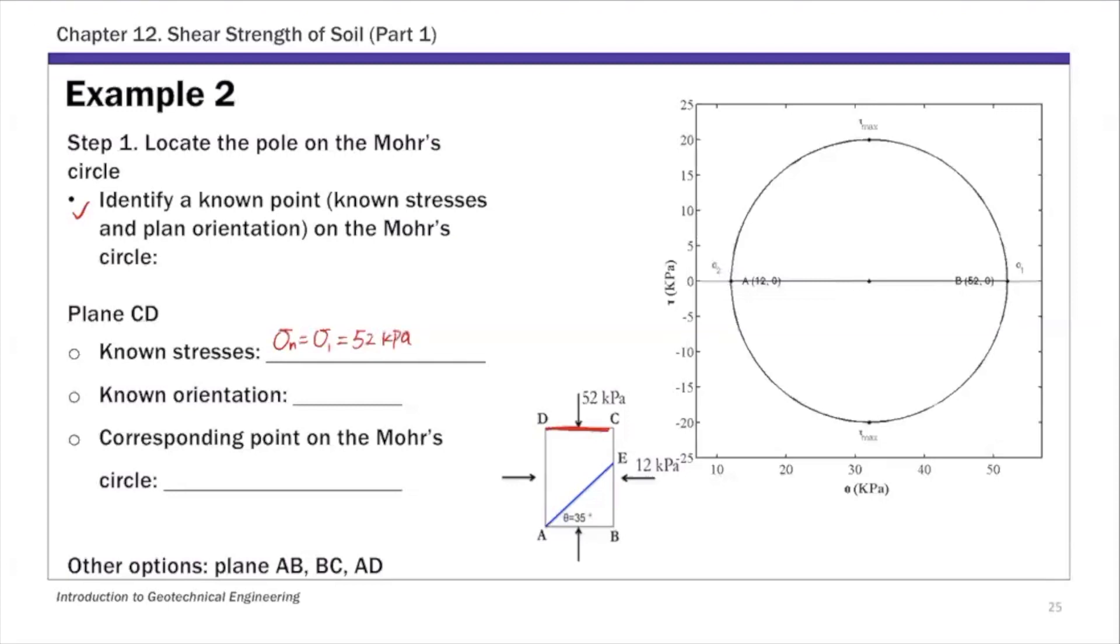Plane CD is a principal plane. The normal stress on this plane is 52, the principal stress, and the shear stress is 0. The orientation is horizontal. The corresponding point on the Mohr circle has normal stress of 52, that's the x-value, and shear stress is 0, the y-value. This point corresponds to sigma 1.